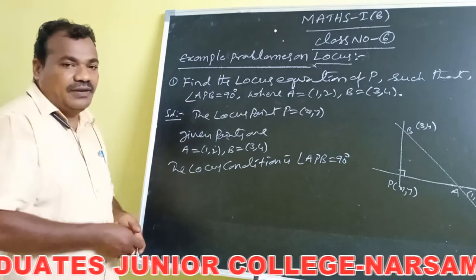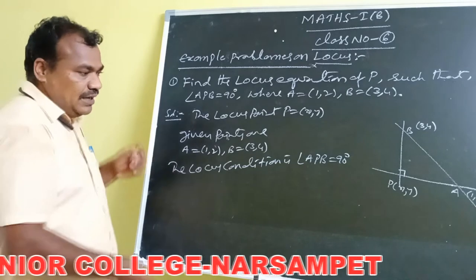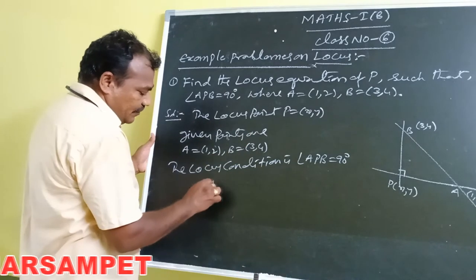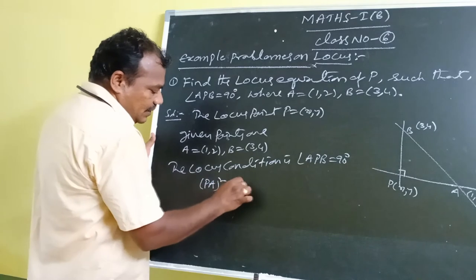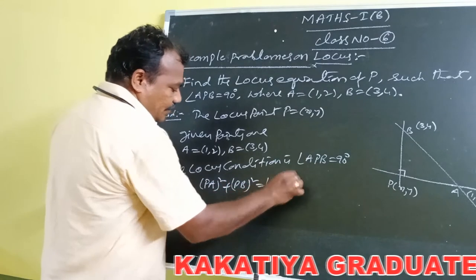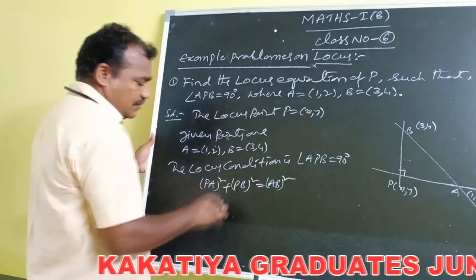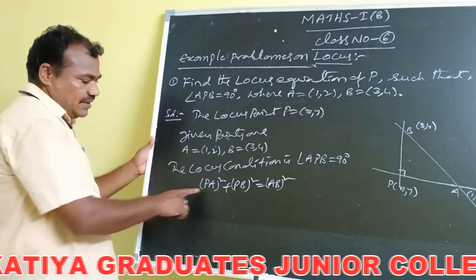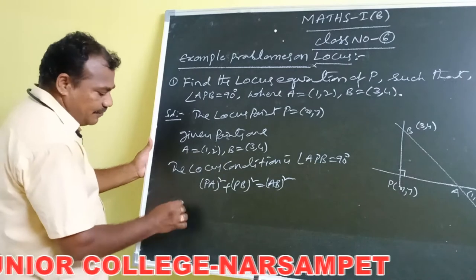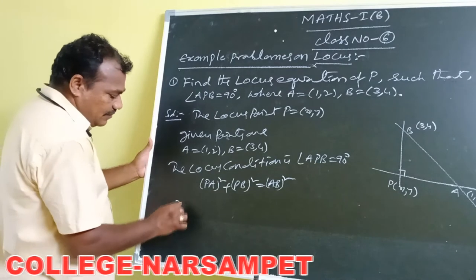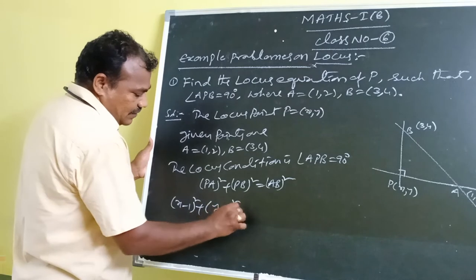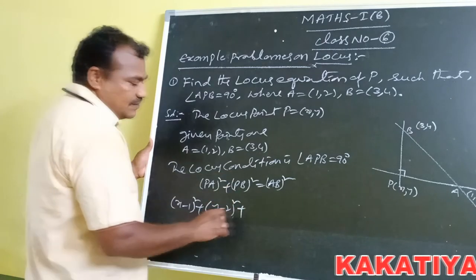For the right angle triangle, we apply Pythagoras. The Pythagoras condition for this triangle is given by PA² plus PB² is equal to AB². Now, PA² — the square of the distance between P and A — is given by (x minus 1)² plus (y minus 2)².